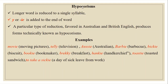Hypochorism is another type of reduction in the form of a word. In hypochorism, the longer word is reduced to a single syllable, and a 'y', 'r', or 'ie' is added to the end. This type of reduction is usually favored in Australian and British English. Examples include: movie from moving picture, telly from television, barbie from barbecue, biccy from biscuit, bookie from bookmark, brekkie from breakfast, hankie from handkerchief, and to take a sickie — a day of sick leave from work.